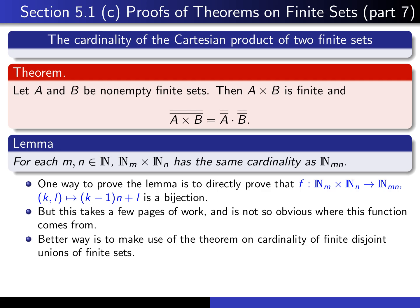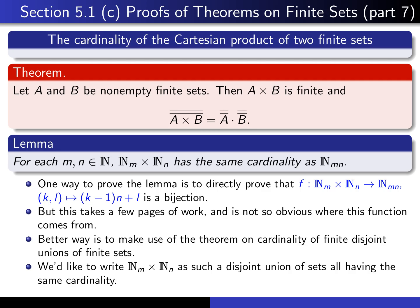But I have a better way to prove the theorem. I'm going to make use of the theorem on cardinality of finite disjoint unions of finite sets. So what we have to do is see if we can write Nₘ × Nₙ as a disjoint union of sets all having exactly the same cardinality.